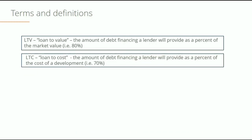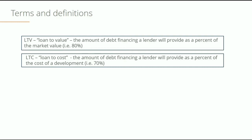Then there's LTC, which stands for Loan to Cost. It's a little bit different — this is the amount of debt financing you can get as a percent of the development cost. The difference is that in Loan to Value, the value already exists and is known. In Loan to Cost, it's something you're going to create that does not exist yet, and therefore it's going to be a lower percentage, let's say 70% as this example.